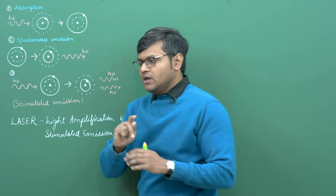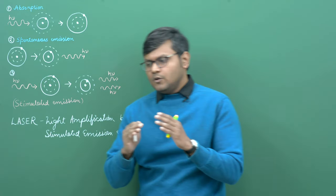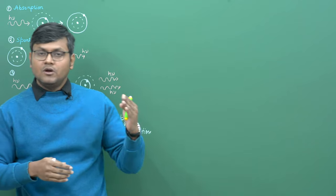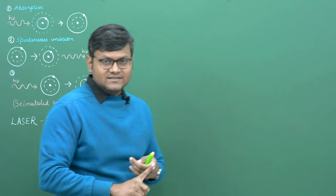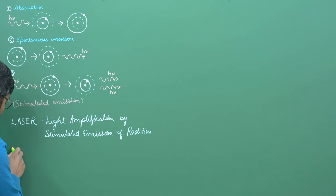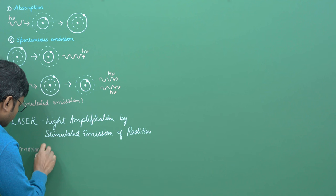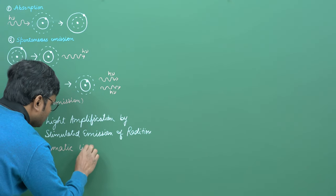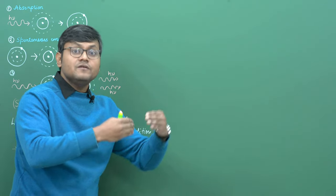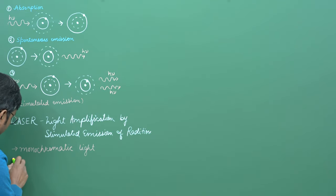To understand what a laser is, let's understand some of its properties. How is laser different from ordinary light? Ordinary light may contain a large number of wavelengths — different wavelengths which are out of phase with each other. Monochromatic light contains the same wavelength, but the waves may be out of phase with each other. Monochromatic coherent light contains the same wavelength with all waves being in phase. A laser consists of monochromatic coherent light — one wavelength, all waves in phase.